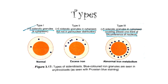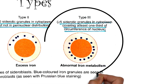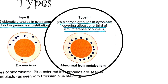There are three types of sideroblasts. Type 1 sideroblasts are those having fewer than 5 siderotic granules in the cytoplasm. Type 2 sideroblasts have 5 or more siderotic granules but not in a perinuclear distribution. Type 3 sideroblasts, also known as ring sideroblasts, have 5 or more granules in the perinuclear region which encircles at least one third of the nucleus.